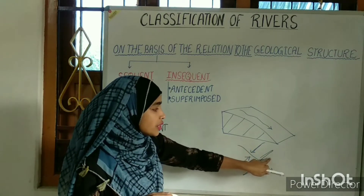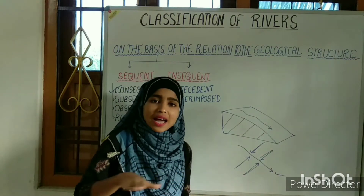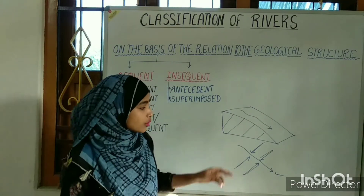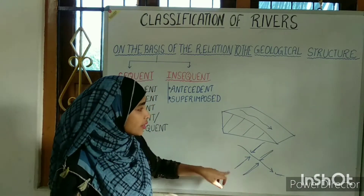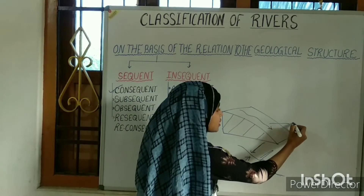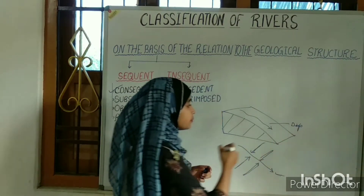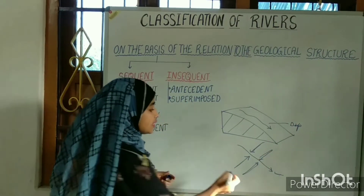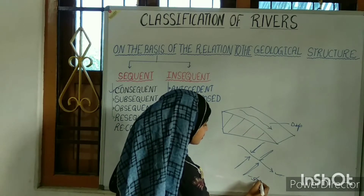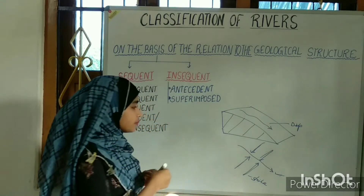These subsequent streams will follow the strike of the bed. That is why the subsequent stream is known as the strike river, and the consequent river is known as the dip stream.